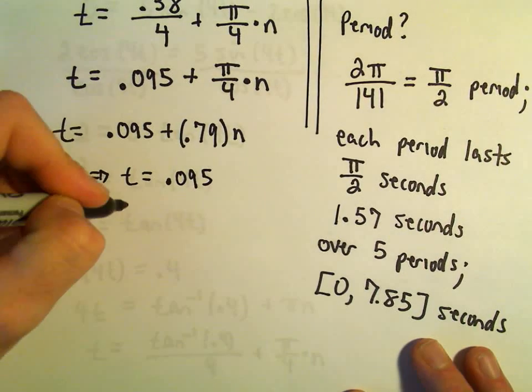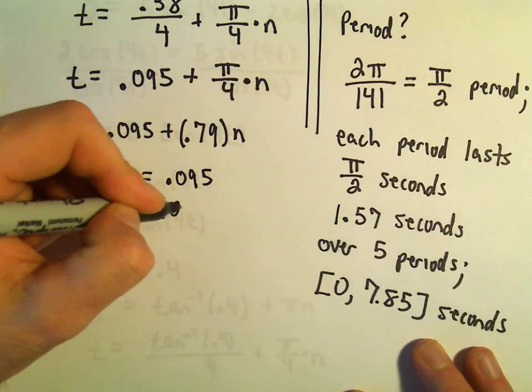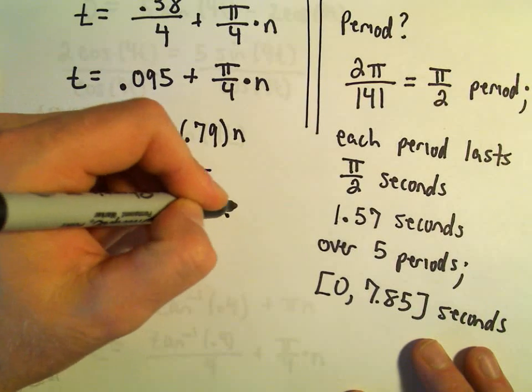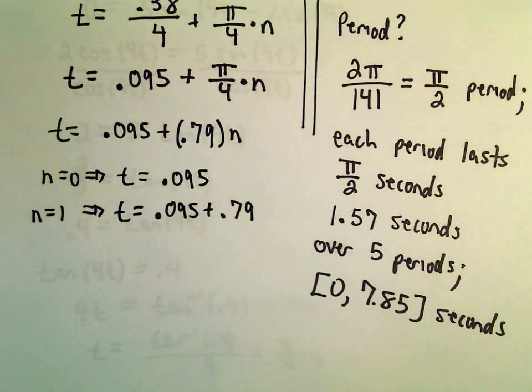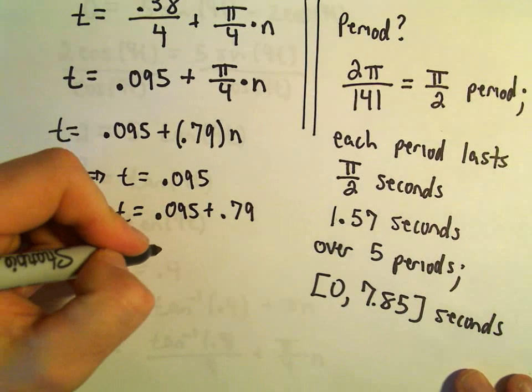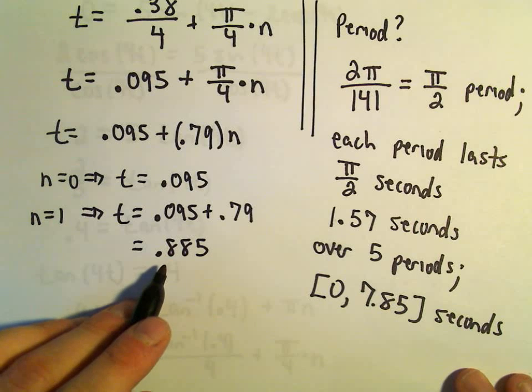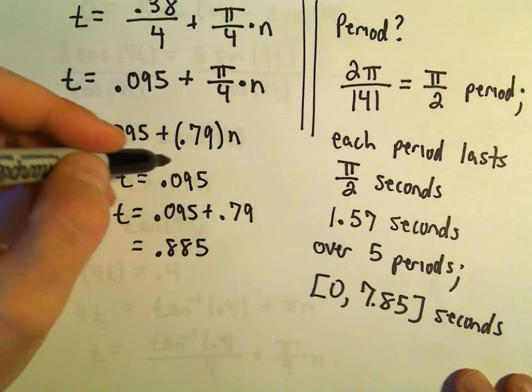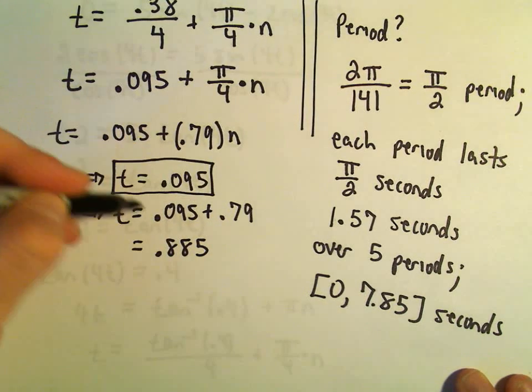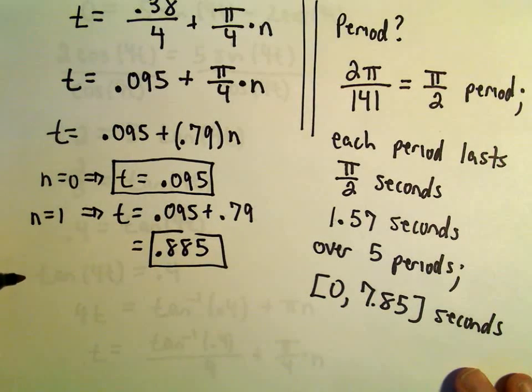If n equals 1, well, we would get 0.095 plus 0.79. So 0.095 plus 0.79, I'm getting that to equal 0.885. So again, after 0.885 seconds, it's back at the equilibrium position. So that'll be another solution that works.